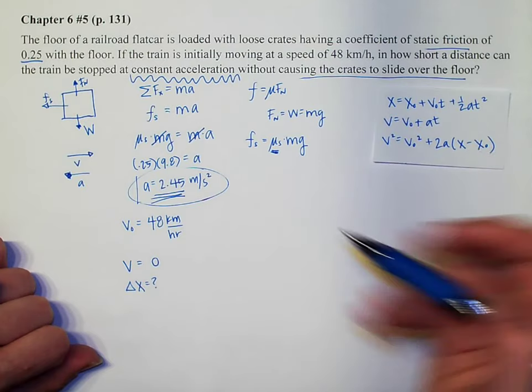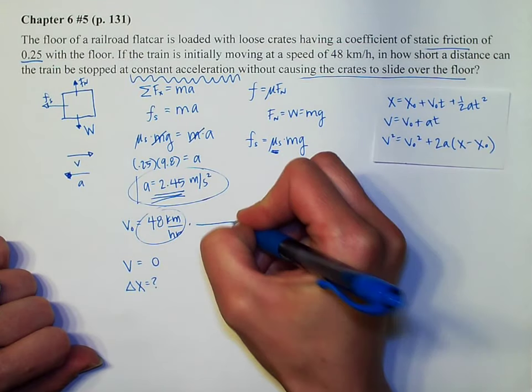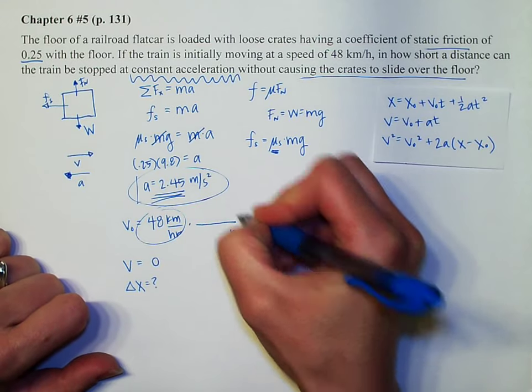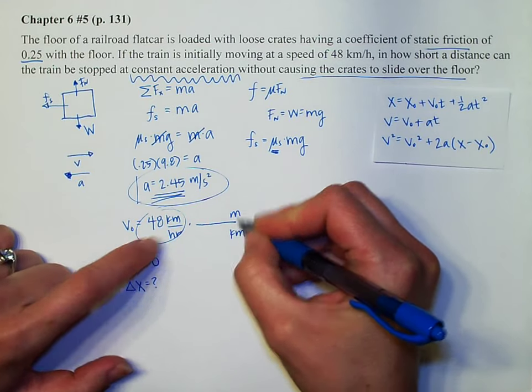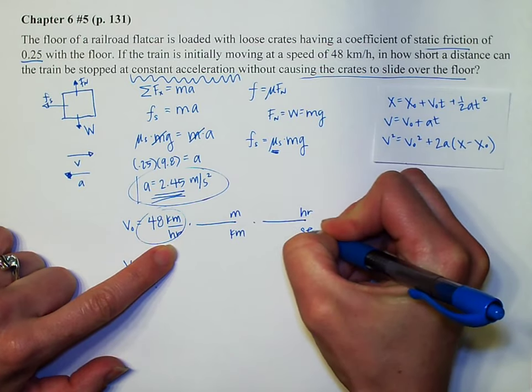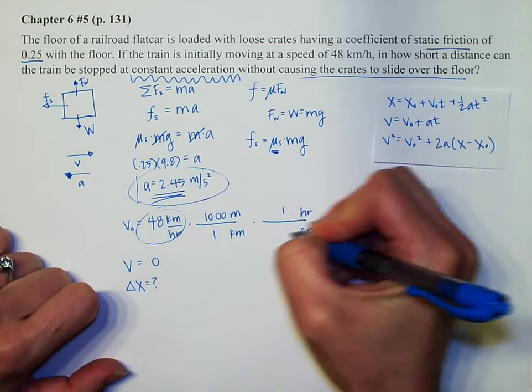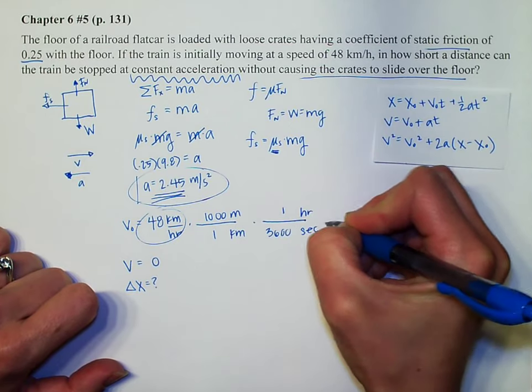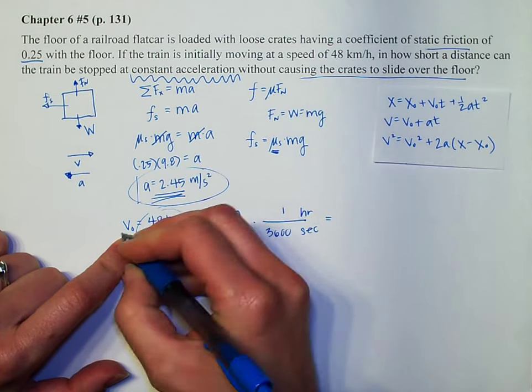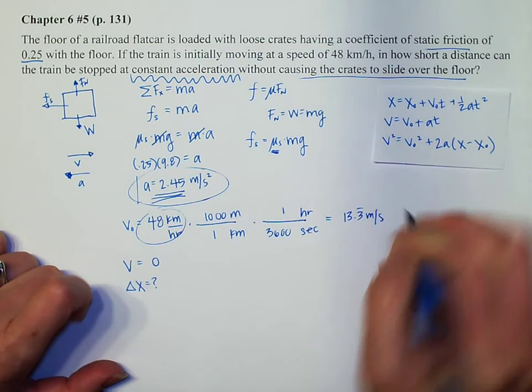But of course, before we do, let's convert this into meters and seconds. So I'll do some quick unit conversion. So kilometers, meters, hour, seconds. So I have a thousand meters in every one kilometer. I have one hour for every 3,600 seconds, which finds out that our initial velocity is 13.3 meters per second. Great.